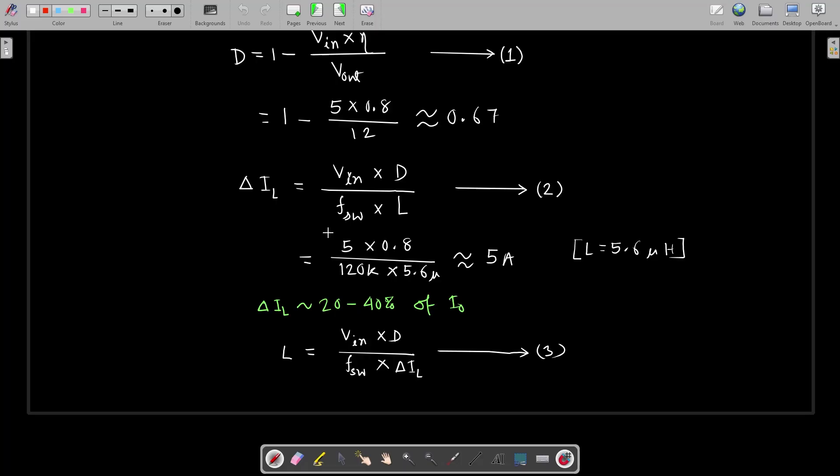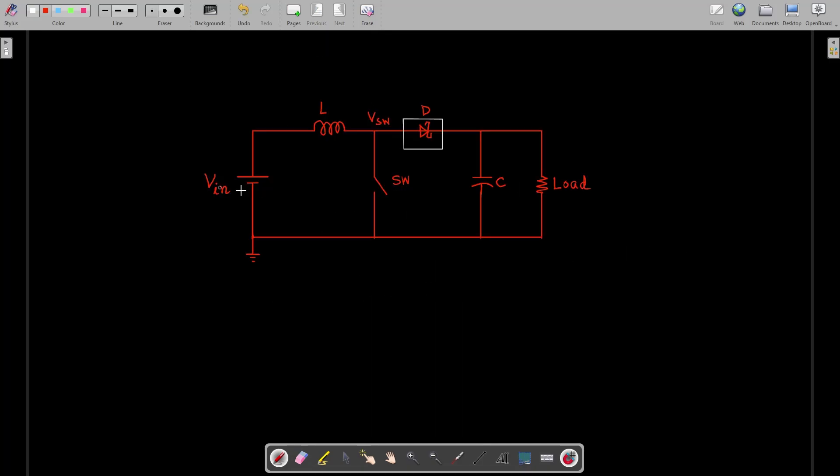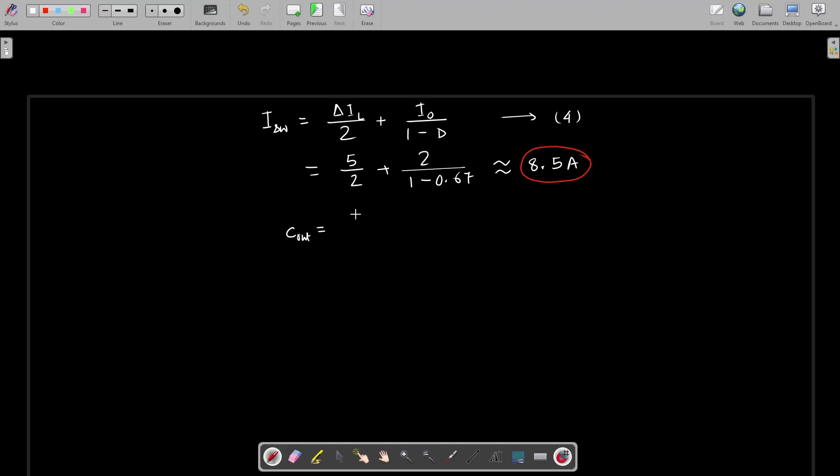The diode also should be able to handle this same amount of current as we have calculated for the switching current isw. The output capacitor is selected based on the desired maximum ripple voltage at the output. The calculated capacitor is 93 microfarad, but I am taking 470 microfarad because my ripple current is too high, so the ripple voltage due to the ESR of the capacitor will be much larger. In my case, to compensate that I had to take larger value of the output capacitor, but that comes at a price of slower loop response of the system.